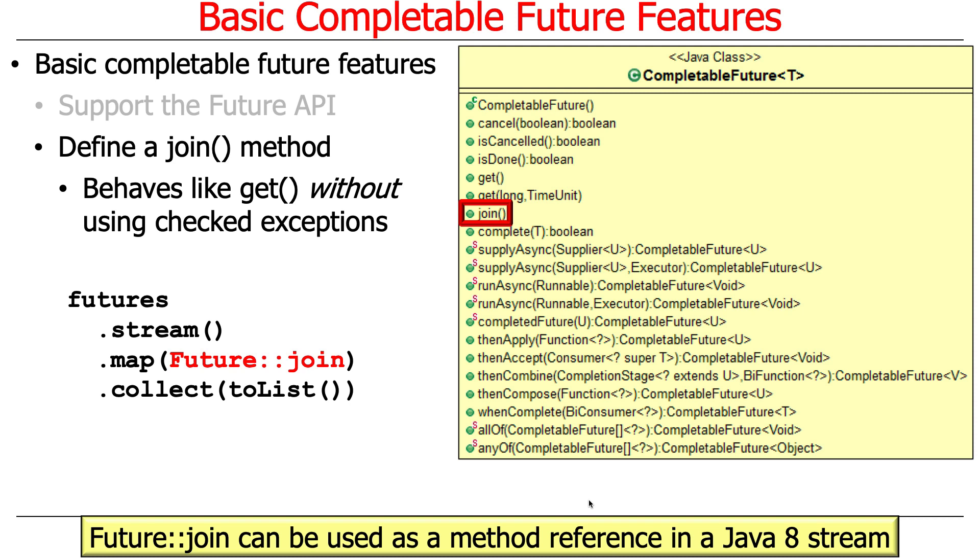Why did they do this and why does it matter? If you don't have checked exceptions, but you have runtime exceptions, then you can use these mechanisms in Java 8 streams as method references or simple lambda expressions. And the code is very concise and easy to understand at a single glance.